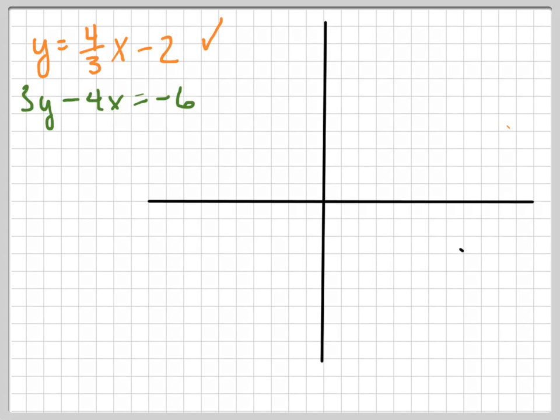So first of all, this orange equation, the easiest way to graph this, because it's in slope-intercept form, is start with your y-intercept (0, -2), and then use your slope. If your slope is 4/3, that means that your rise is 4 for every 3 that you run from a point.